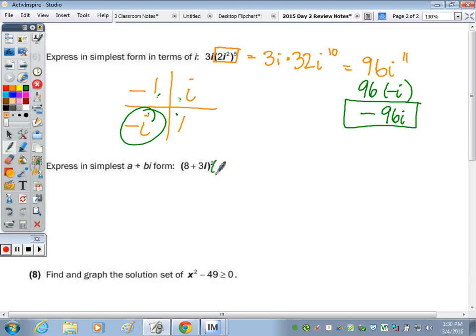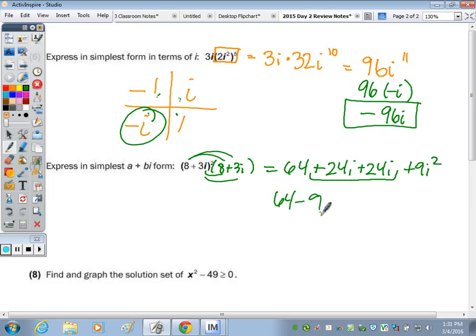Number 7, we have to expand and do the full foil. So this is 64, 8 times 8, 8 times 3, 24i, 3i times 8 is another 24i. They should always match. And then 3i times 3i is 9i squared. But what does 9i squared become? So this is really 64 minus 9, which is, and then bring down your i terms, so 48i.